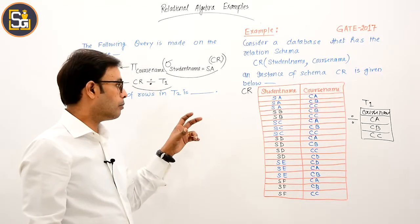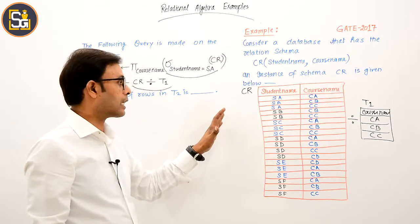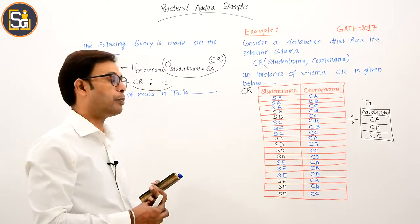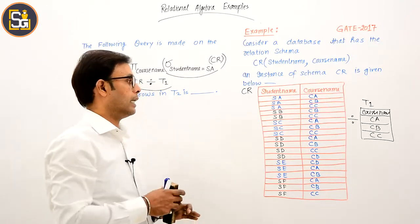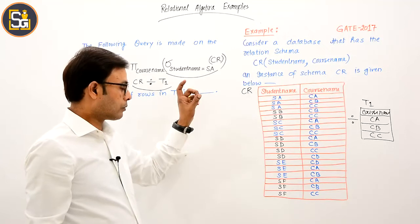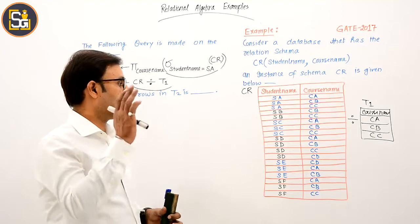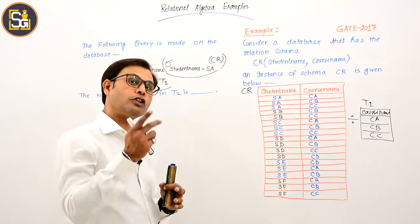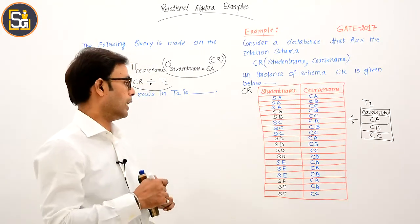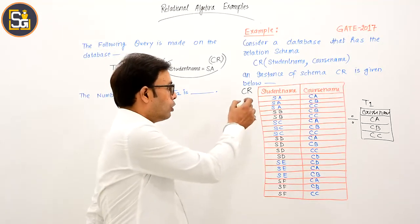Now how will we select this, meaning how will we perform this - let's see. So how will their names come? Actually, we can see this from aptitude - those students who have enrolled in all three courses. If you look...